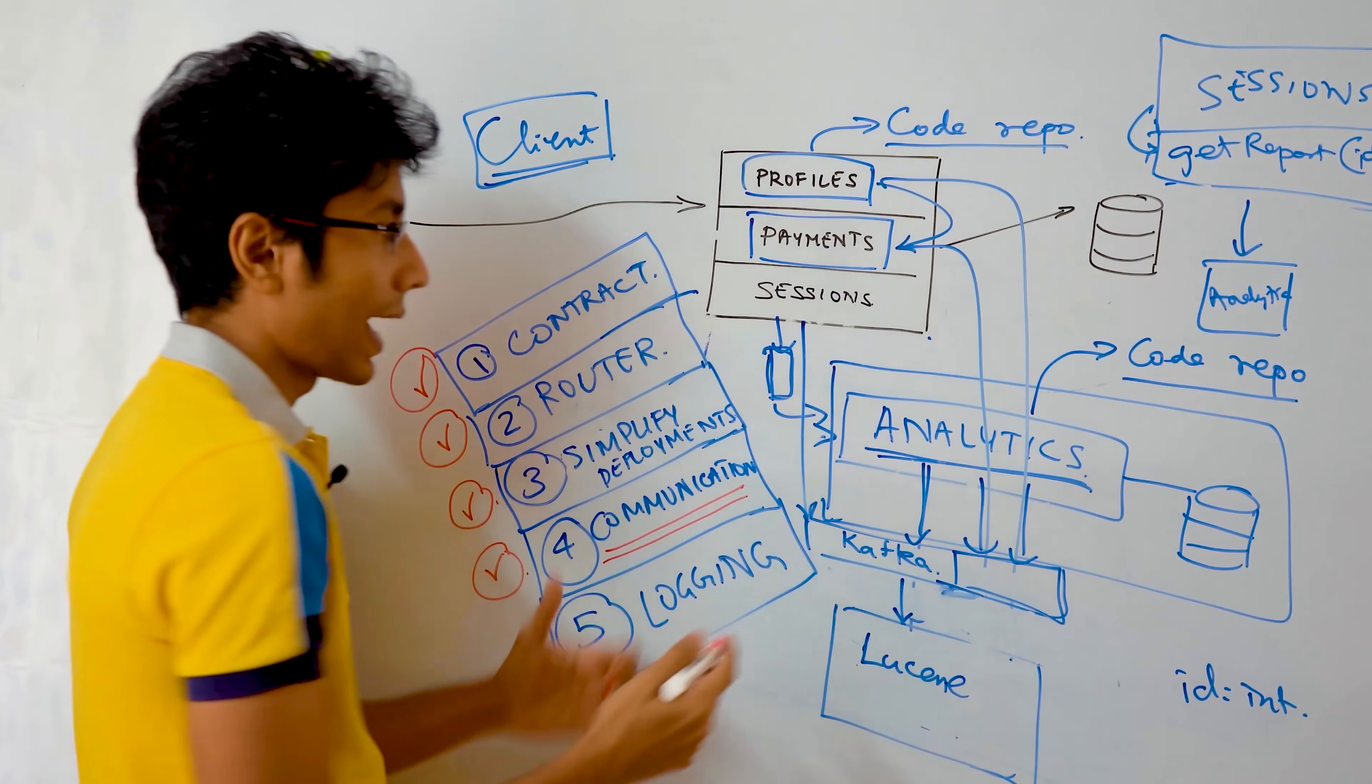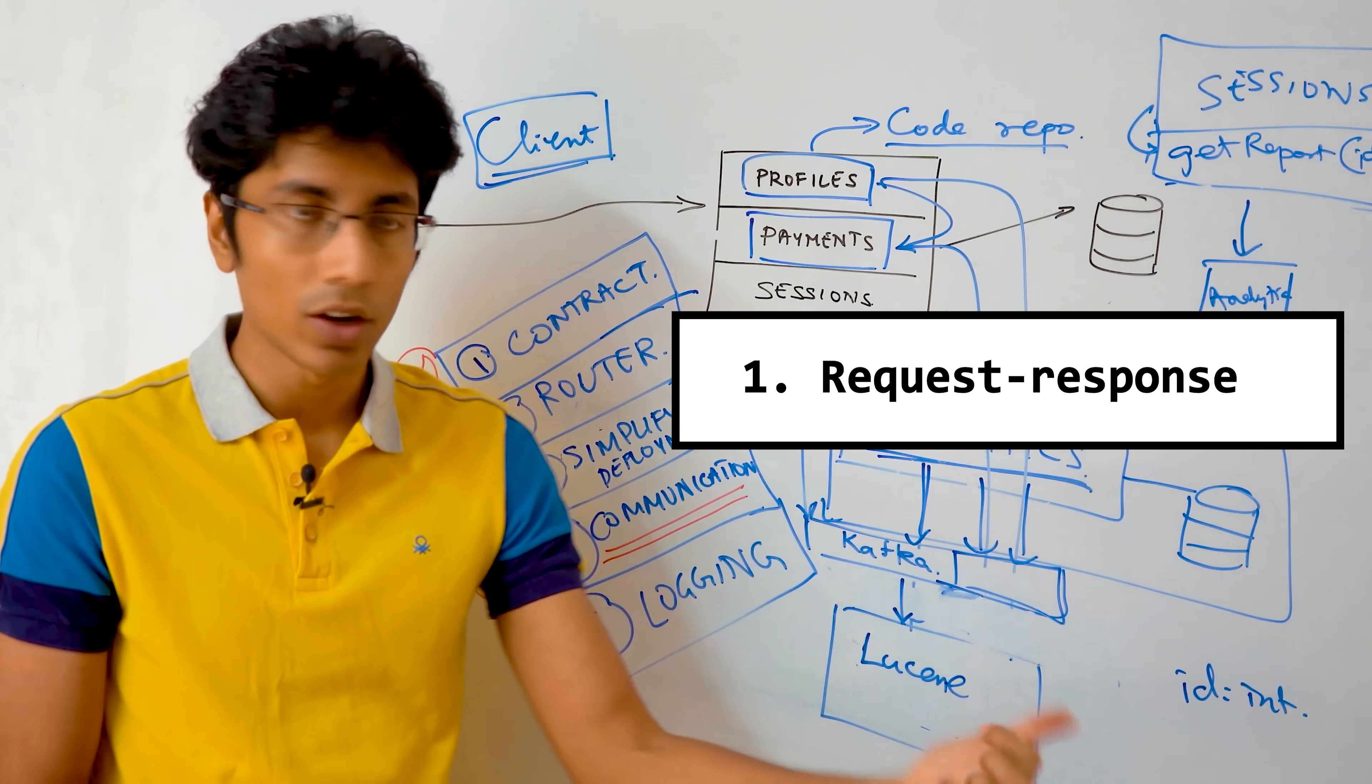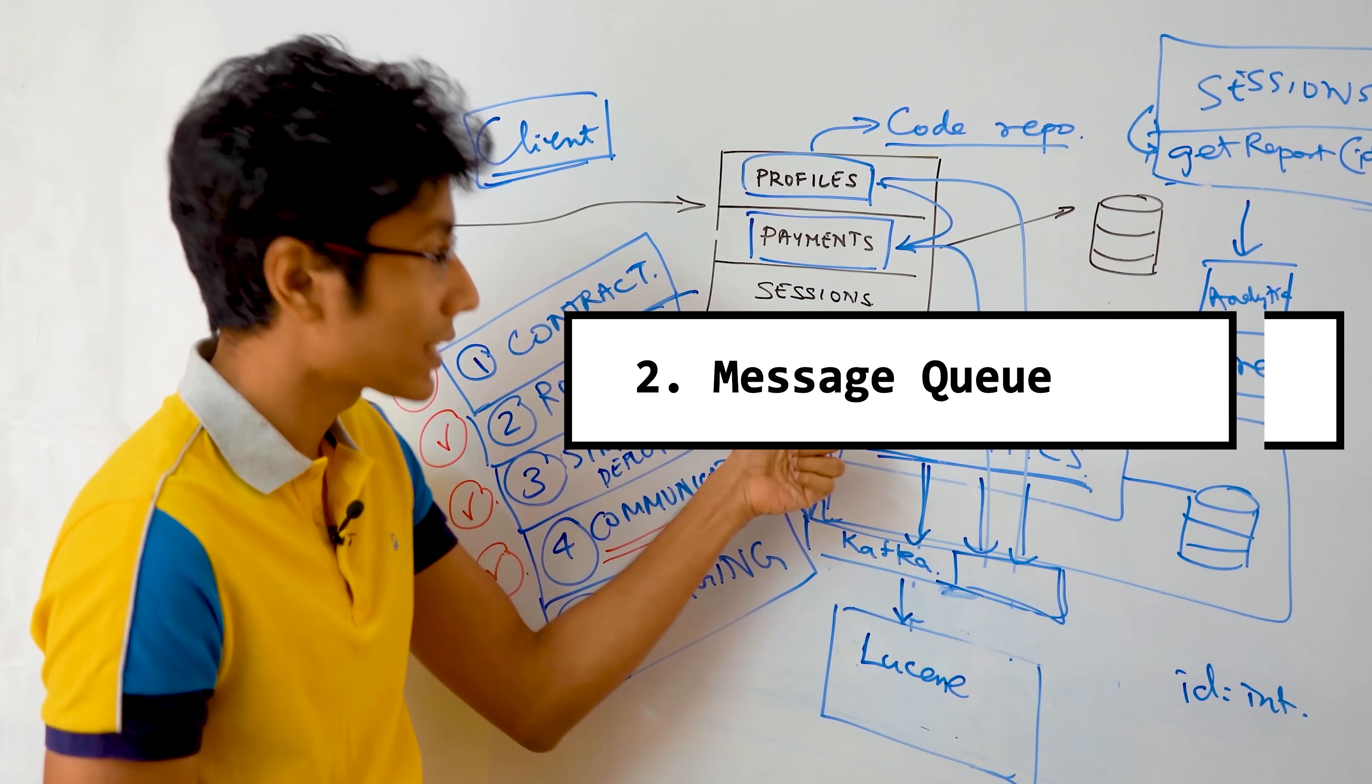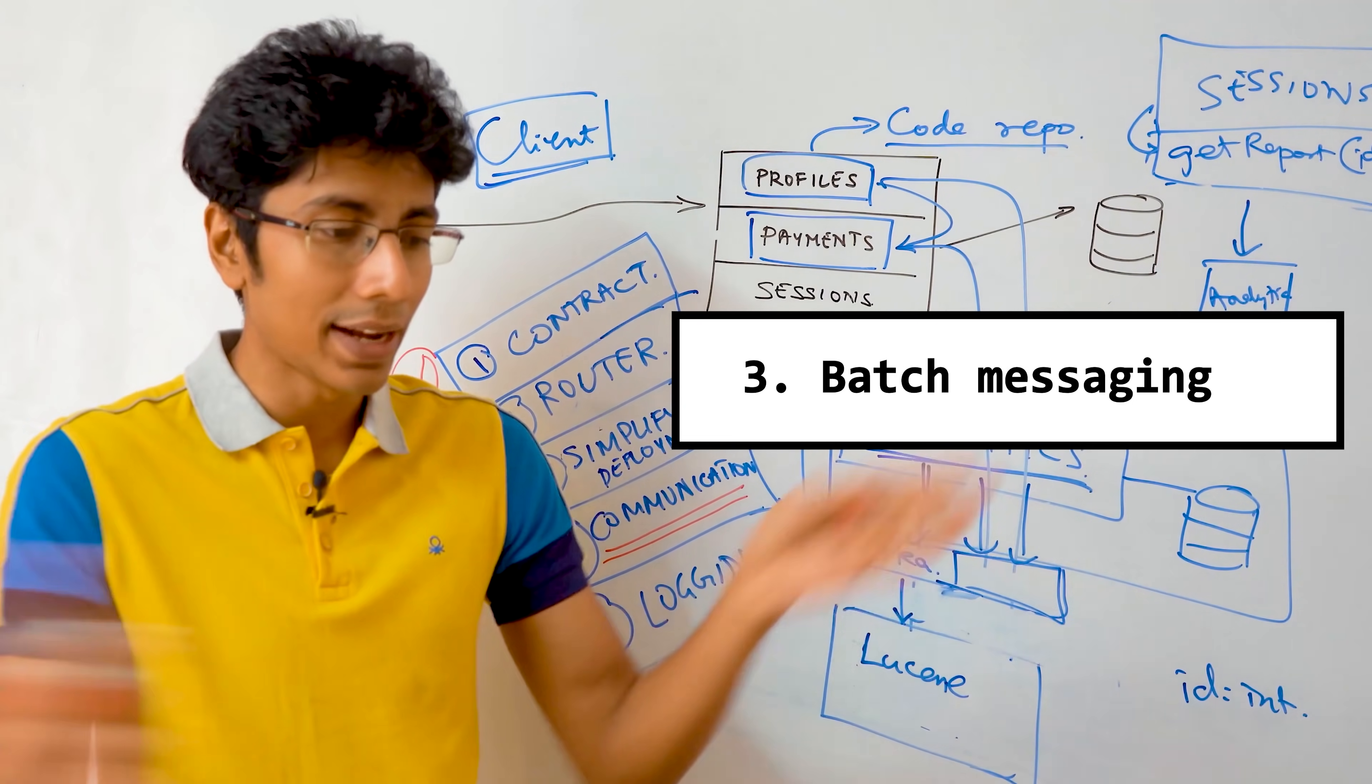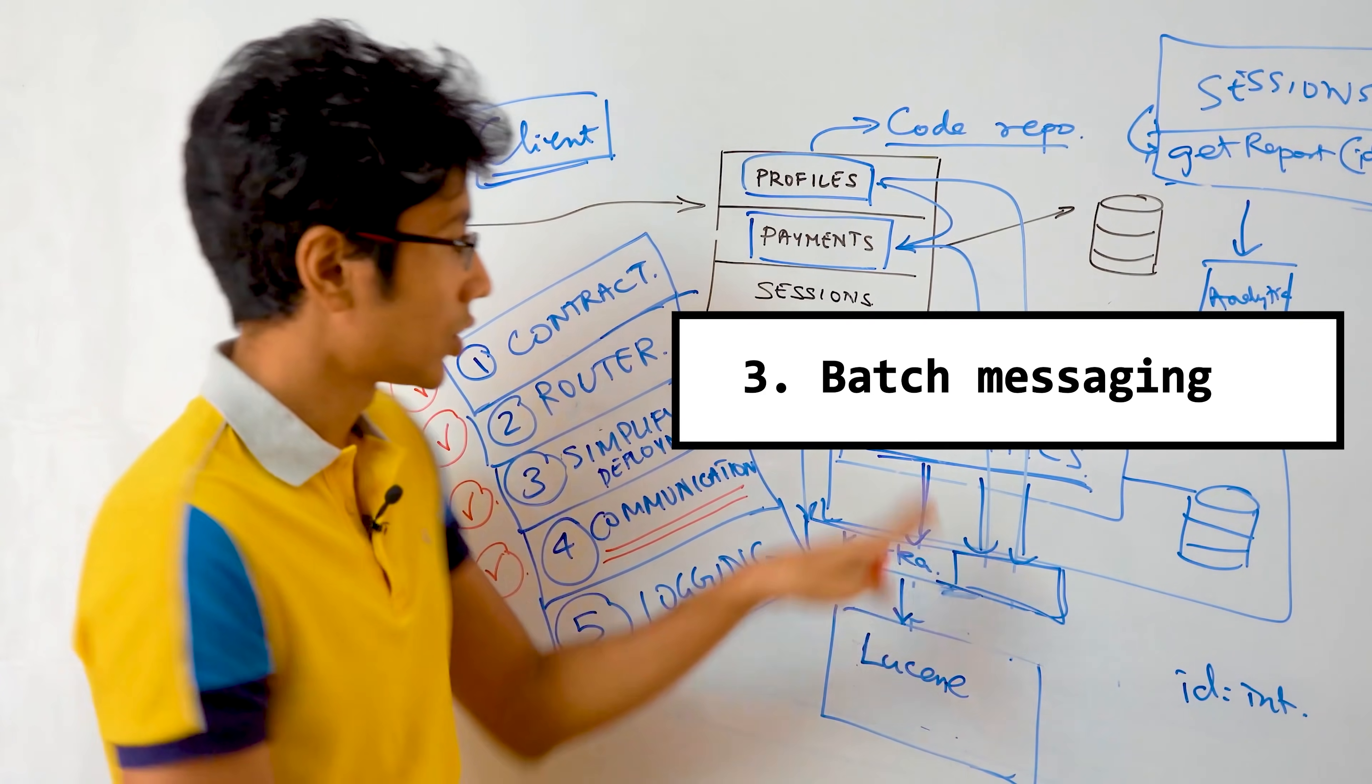Is communication between the services well-defined? The communication may be in different ways. You might have a request response architecture, which is standard. You might have a messaging queue which takes requests and then sends it. And you might also have some sort of a batch processing thing where you take 10 requests and send them together to the next service.